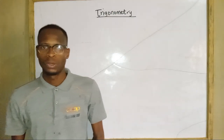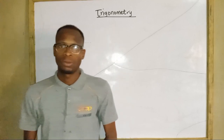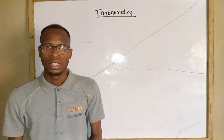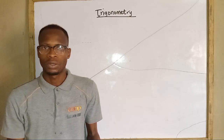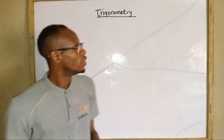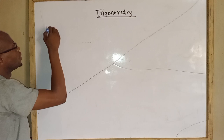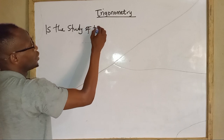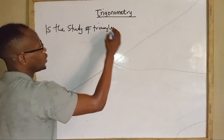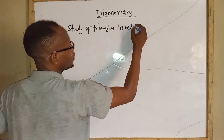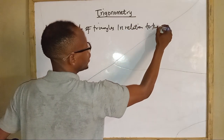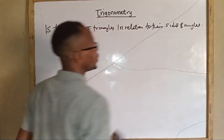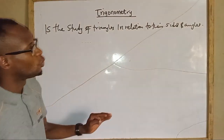Welcome back to my YouTube channel. Today we'll be looking at trigonometry. Trigonometry is the study of triangles in relation to their sides and angles. That's the definition of trigonometry — it only deals with sides and angles.